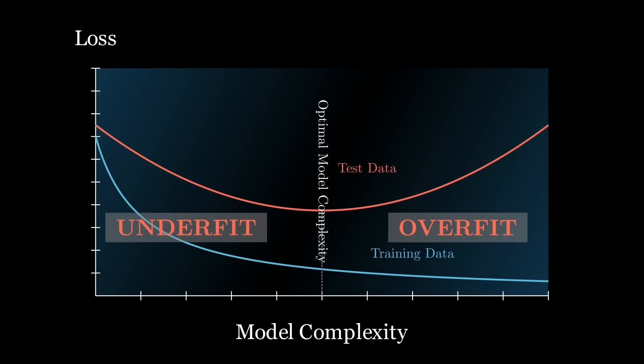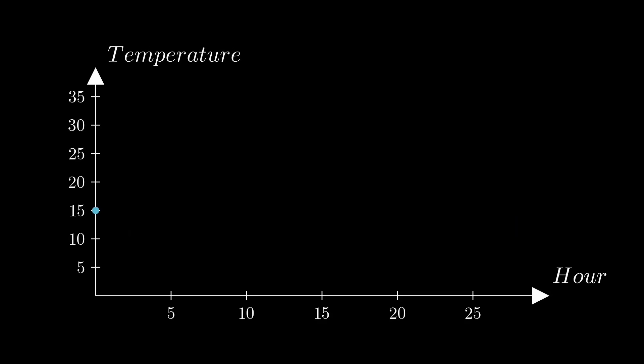Overfitting occurs when a model or theory becomes so finely tuned to specific examples that it fails to generalize to new unseen situations. This concept is not only pivotal in data science and machine learning but also offers valuable lessons for how we approach learning and making decisions in everyday life.